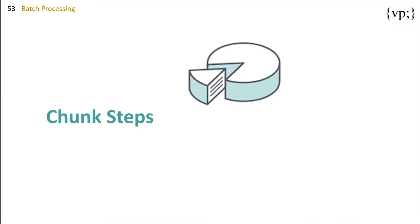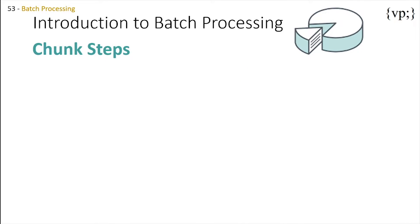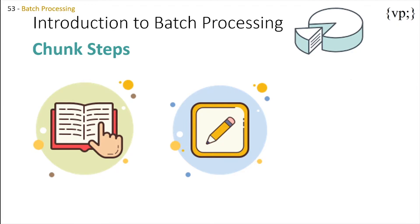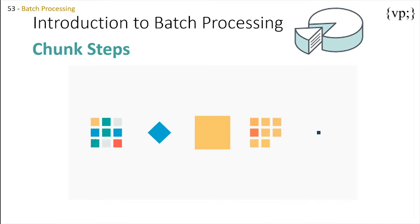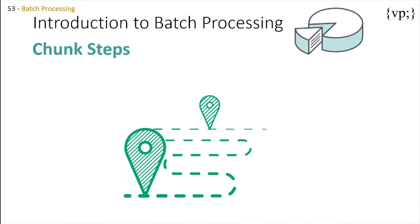Chunk steps are divided into three parts: reading source data, applying business logic onto said data, and finally storing the changed data. Since chunk steps process a lot of data, Java EE allows them to place down regular checkpoints so they don't have to start all over again if there was an unexpected interruption.